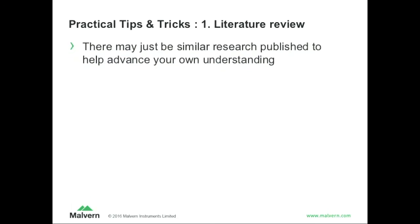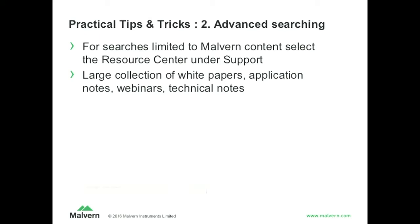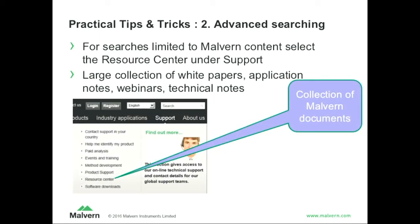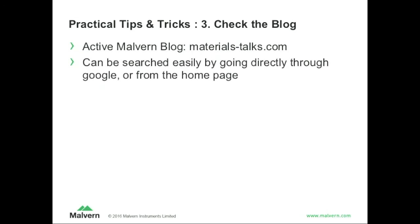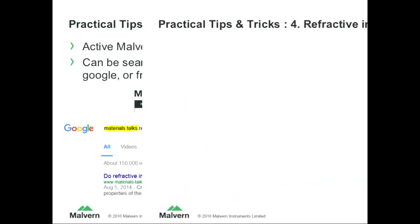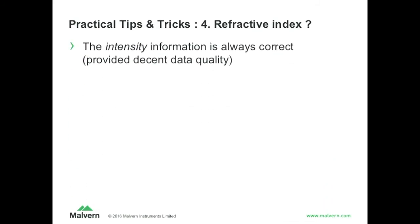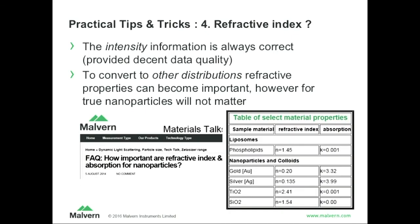I wanted to give you a few quick tips and tricks here. You'd be surprised how many people have done something similar to what you are trying to do, so use Google to your advantage. Put 'Zetasizer' in there, but other systems might work as well. You can actually find a lot of application notes on our website — it's a little bit hidden, but there's a thing called a Resource Center on there. Then we have a blog where we try to write useful things: materials-talks.com. Sometimes it's easier to just use Google to get there. For example, for refractive index — a very popular question we get is: what's the refractive index of liposomes? Well, the intensity information is always correct, so you don't need to worry about refractive index if you don't want to go to a number or volume distribution. But just to keep you at ease, it's 1.45 — kind of a good average for the refractive index.